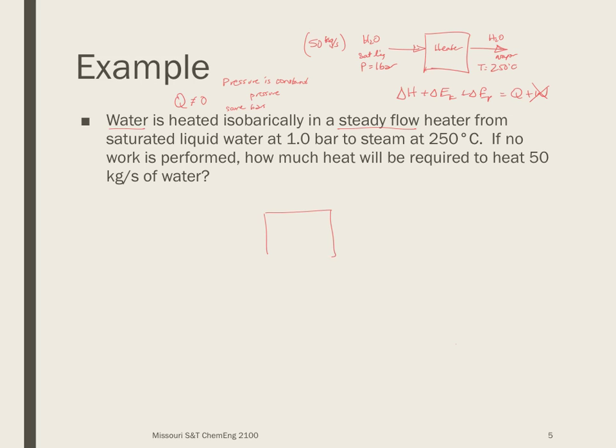And I can clean that up perhaps. I'm going to have 50 kilograms per second coming out as well as in. It's going to be pressure of one bar coming in as well as out because the pressure is constant. We know work is going to be zero. And we know Q is not going to be zero. I know that the exit temperature is going to be 250 degrees C. And this is going to be a saturated liquid which will define the temperature.